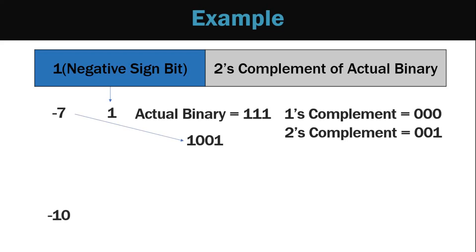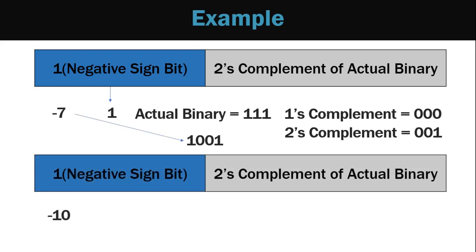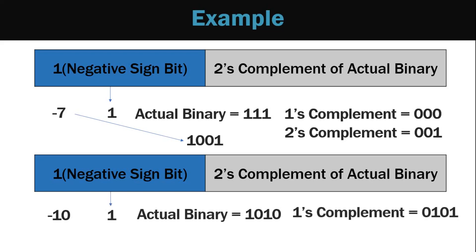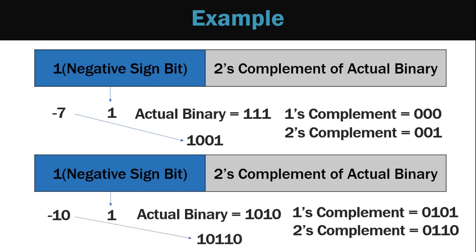Another example: minus 10. The sign bit is 1 and 10 is equivalent to 1010. The 1's complement of 1010 is 0101, and after adding 1 we get the 2's complement as 0110. So minus 10 is represented as 10110 in 2's complement form.